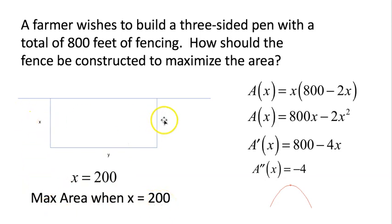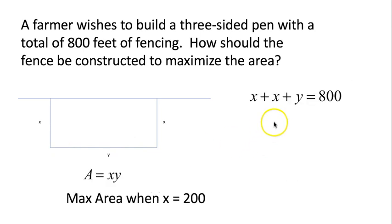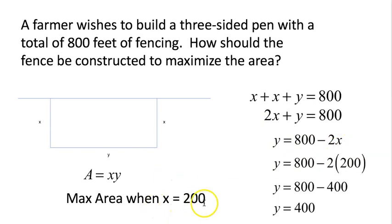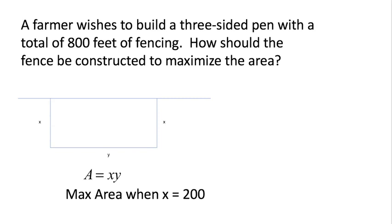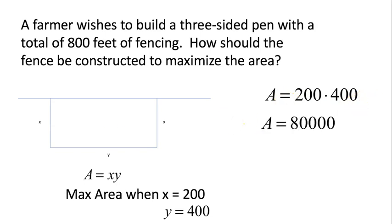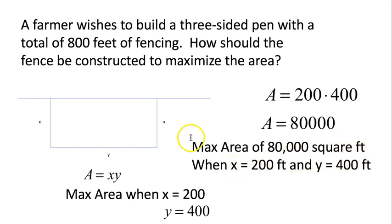x is 200, so we can figure out y and the maximum area. y equals 800 minus 2x — plugging in 200 for x: 800 minus 2 times 200 equals 800 minus 400, so y is 400. Maximum area when x is 200 and y is 400. Area equals x times y: 200 times 400 equals 80,000. So the maximum area is 80,000 square feet when the two parallel sides are 200 feet and the perpendicular side y is 400 feet. That's how we design the pen to get our maximum area.